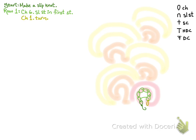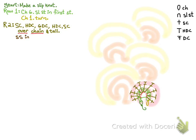For row two, we're going to single crochet, half double crochet, six double crochet, half double crochet, single crochet, over the chain and tail. And so that's over the chain and not into each individual stitch. And that will give you a nice fluffy little scallop. And then slip stitch in the first stitch.